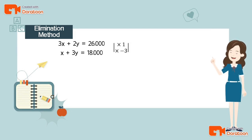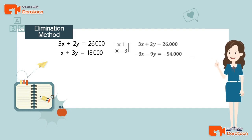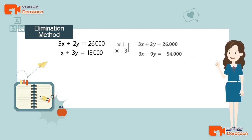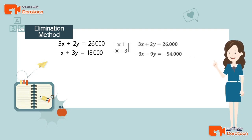Multiplying everything in the first equation by 1: 3x × 1 = 3x, 2y × 1 = 2y, and 26,000 × 1 = 26,000. Multiplying everything in the second equation by −3: x × −3 = −3x, 3y × −3 = −9y, and 18,000 × −3 = −54,000.